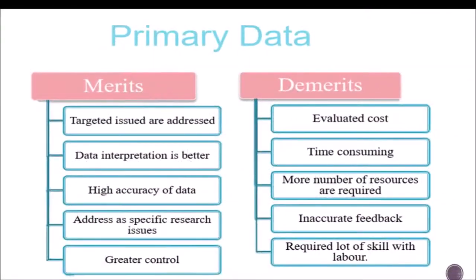The advantages and disadvantages of primary data: the merits include that the targeted issue is addressed, data interpretation is better, high accuracy of data, it addresses a specific research issue, and gives greater control — because it is first-hand information.